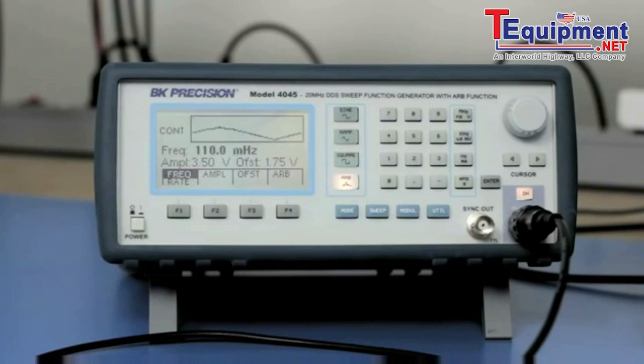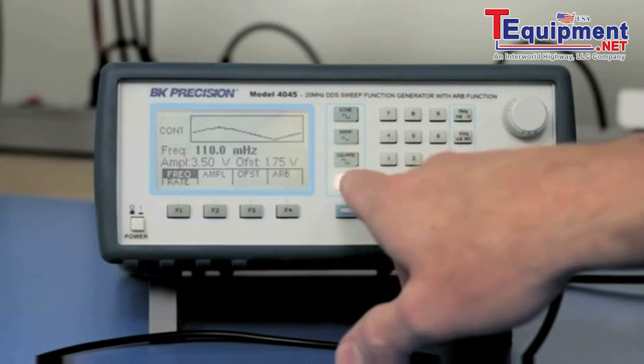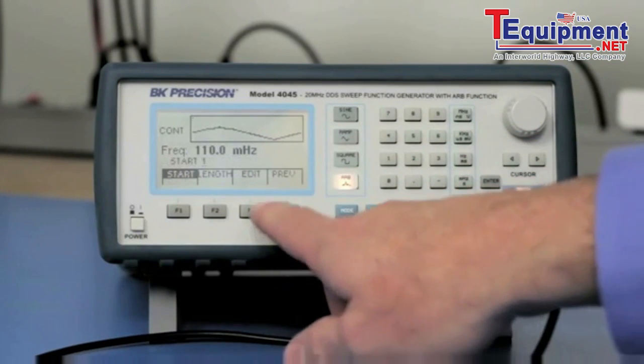So to generate the waveform that we're going to use to simulate the signal that the 5492B is measuring, I'm going to use this 4045 arbitrary function generator. And to generate the signal, what I've done is I've gone into the ARB menu and clicked Edit.